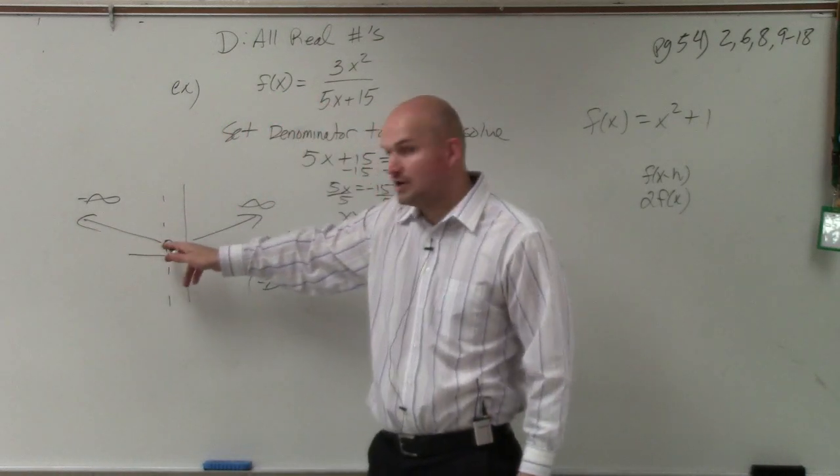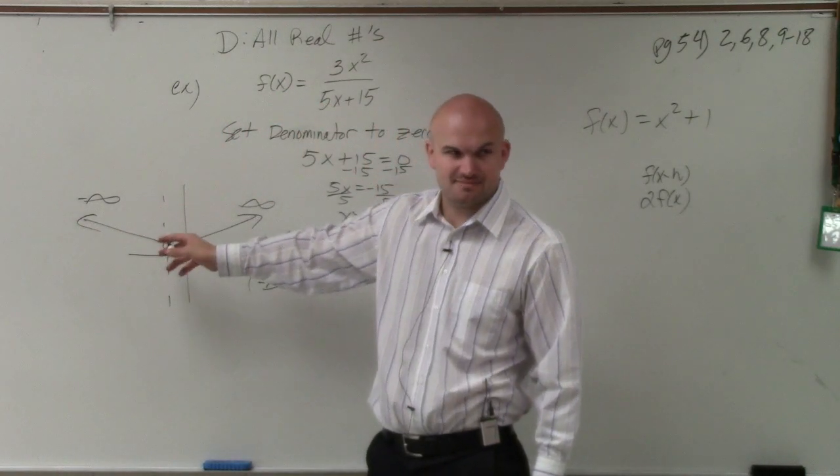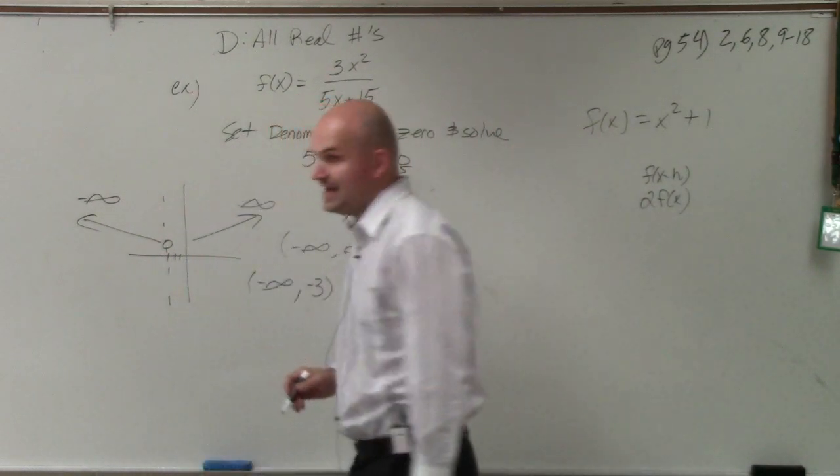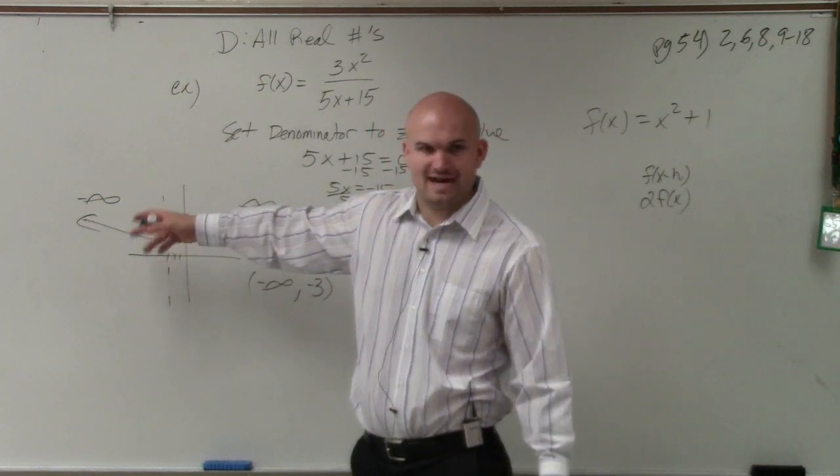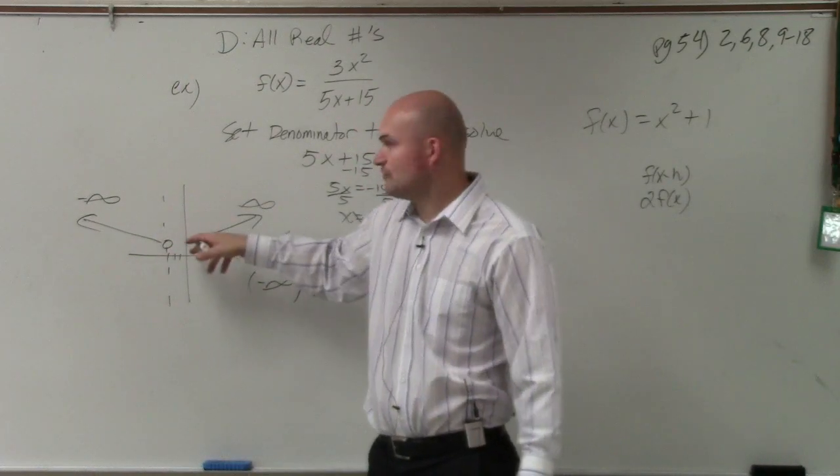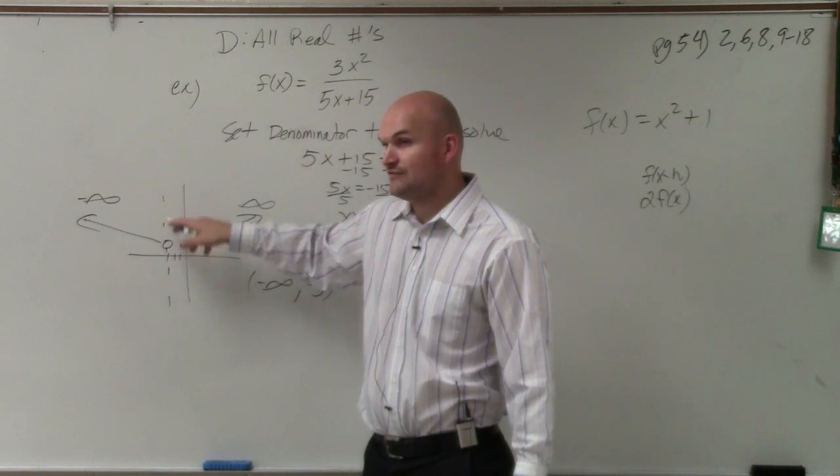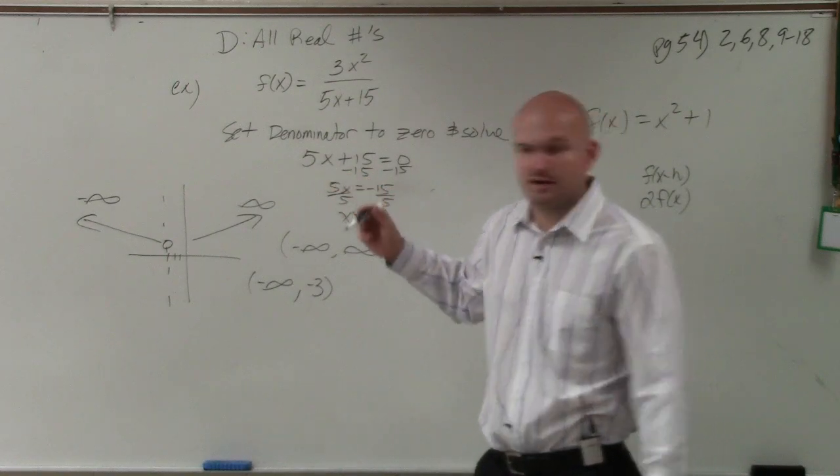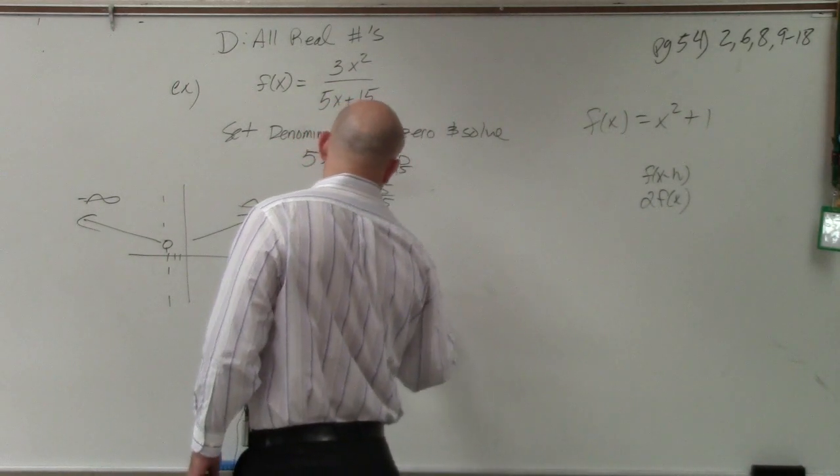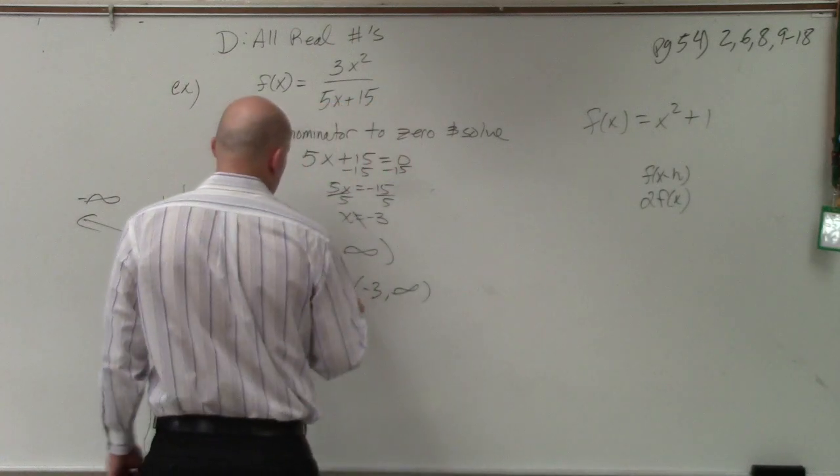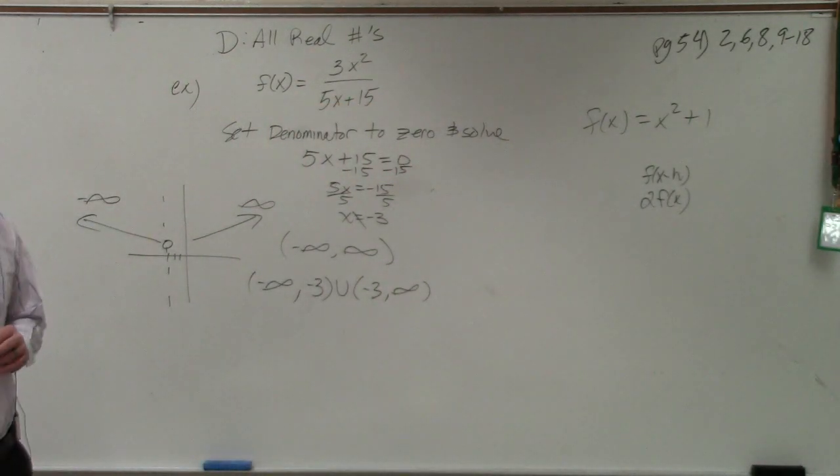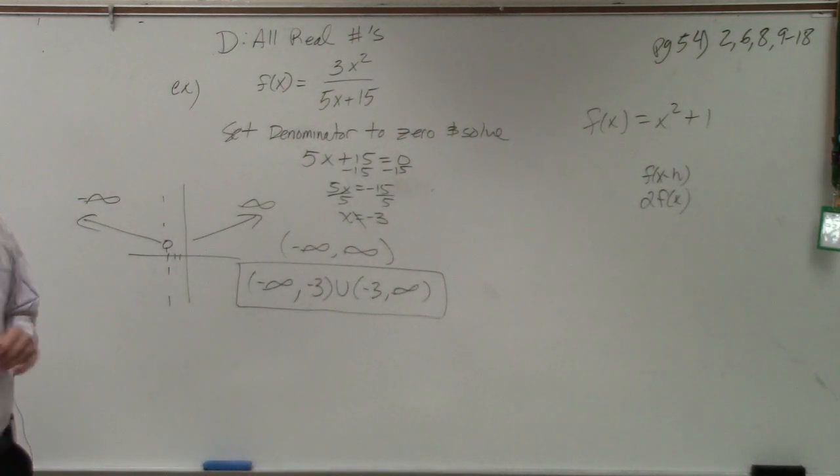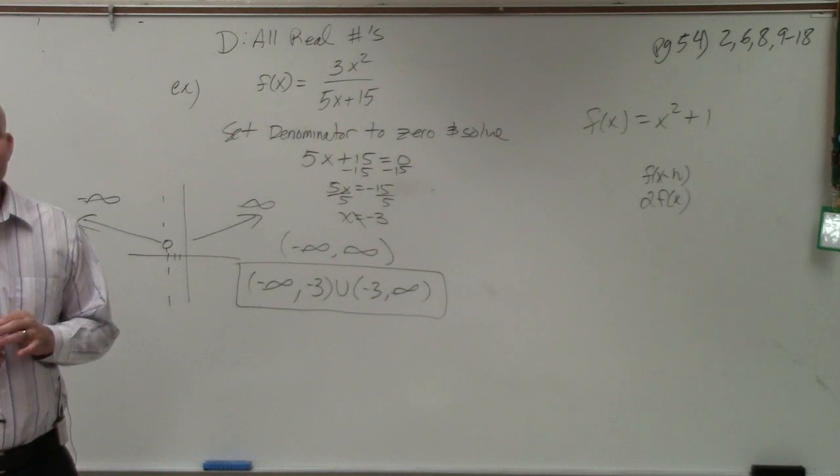But our function's only going to go up to our hole, our asymptote, which is labeled at negative three. Then there's this hole or asymptote. So we have to cross over it because it can't equal negative three. And then from negative three onto infinity, we're still good, though. All other numbers were good. And then we just connect those with a union. So the domain of this is negative infinity to negative three, union negative three to infinity.